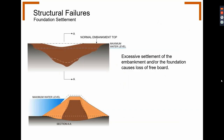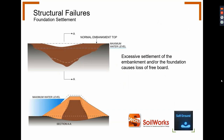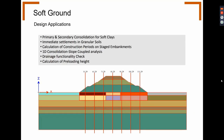Another reason for insufficient freeboard is excessive settlement of the embankment and foundation. This failure falls under the structural failure of the dam and can be addressed using the first SoilWorks module we will discuss: the soft ground module. Soft ground usually pertains to clay, but there are references which consider other soil types to be a weak layer depending on the N-value from the standard penetration test. Consolidation properties of the soft ground, loading, and duration of construction can be modeled using this module. Design applications include immediate settlements in granular soils, 1D consolidation, drainage functionality, and calculation of pre-loading height.